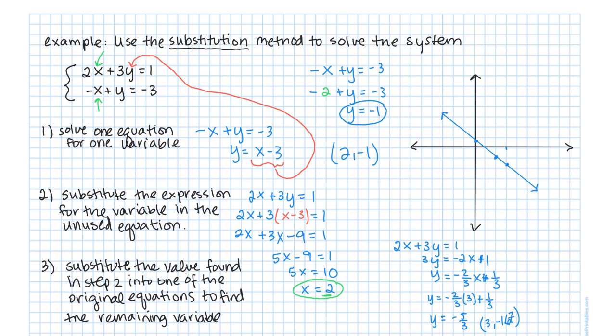Now let's graph the other line in a different color. Our other equation, negative x plus y equals negative 3, was already solved for y in step 1: y equals x minus 3. So the y-intercept is negative 3, with slope 1 — rise one, run one. Here's our other line, and they do intersect at the point (2, negative 1). That is the solution to our system.